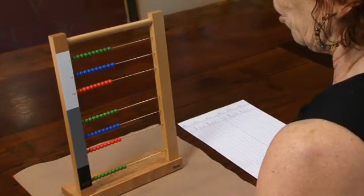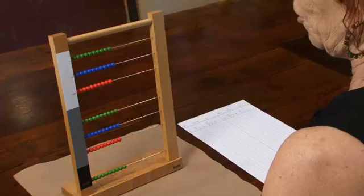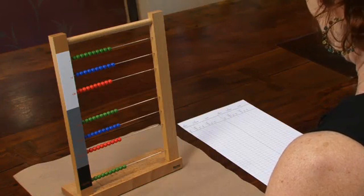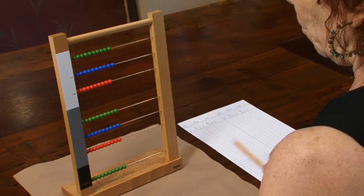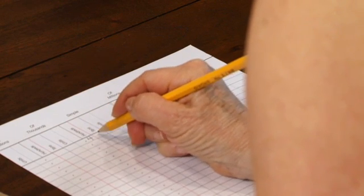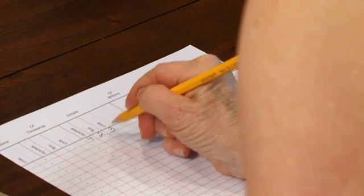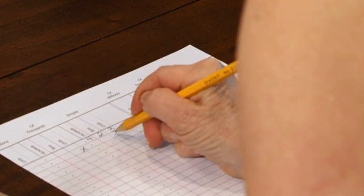This is multiplication on the large bead frame with a one-digit multiplier. We're going to multiply 423 taken three times.